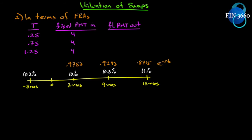In this case, I have my timeline — the same timeline as before: three months, nine months, and fifteen months. I have my zero rates and my discount factors all in place. What we want to do is figure out, at each point in time, what the net cash flow is that needs to be traded, and figure out what the forward rate is for that period of time. Our next payment will be three months from now (0.25), then 0.75, then 1.25.